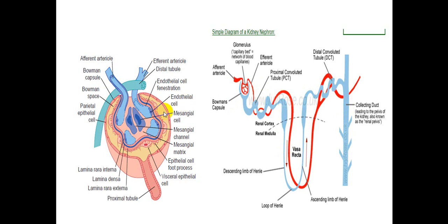This is the glomerulus. In the zone, the glomerulus consists of the afferent arteriole, efferent arteriole, and the Bowman's capsule.